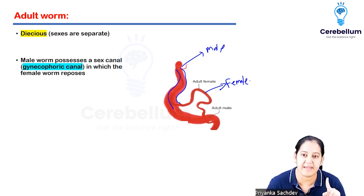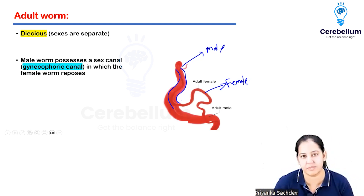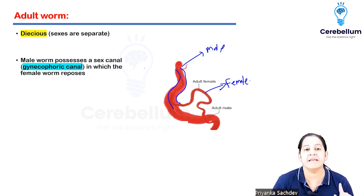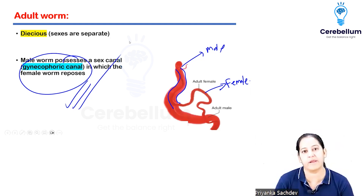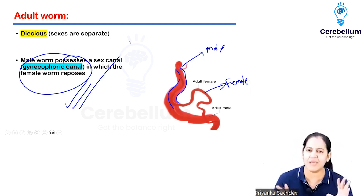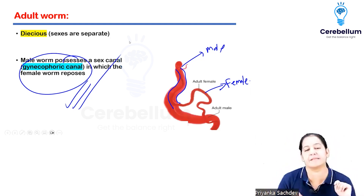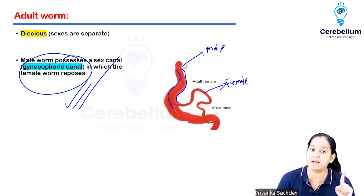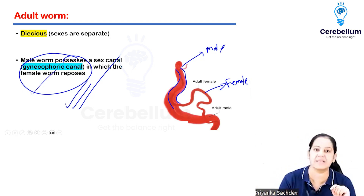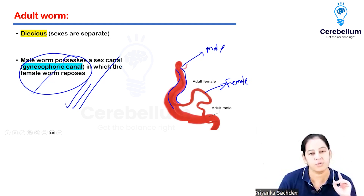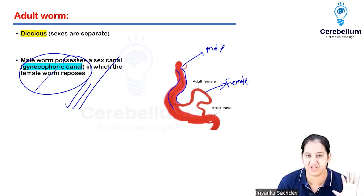The female enters the male body for sexual intercourse. This canal is called the gynecophoric canal - very important. It is a unique structure: the male has a canal called the gynecophoric canal, and the female enters that canal for performing sexual intercourse. No other parasites have such a canal.